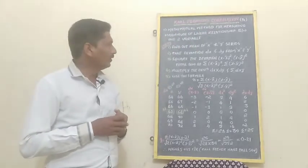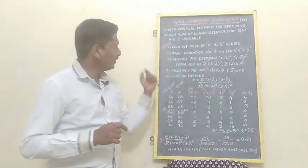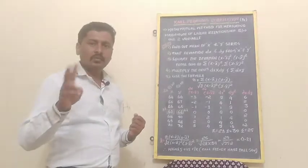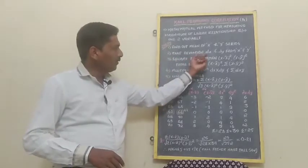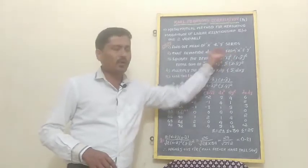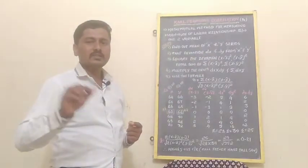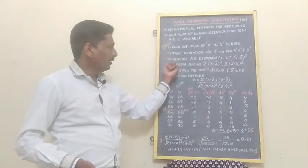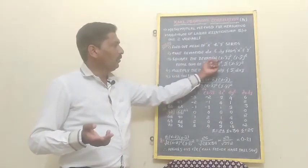There are majorly five steps. First step: find out the mean of x and y series. Second step: take the deviation of x and y from the mean, in the form of dx and dy, where dx = x minus x-bar and dy = y minus y-bar.